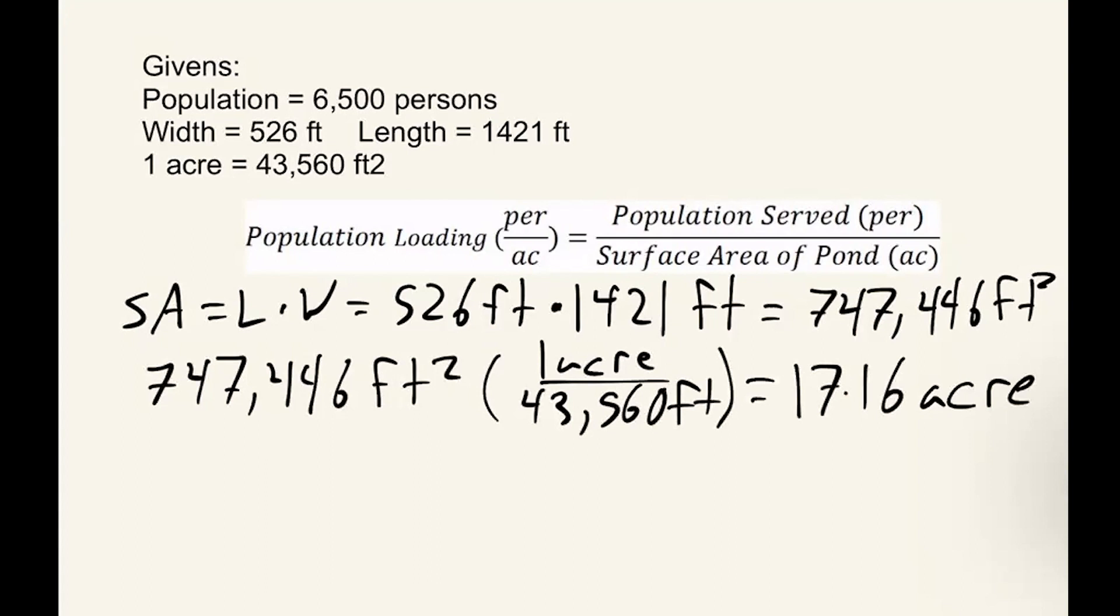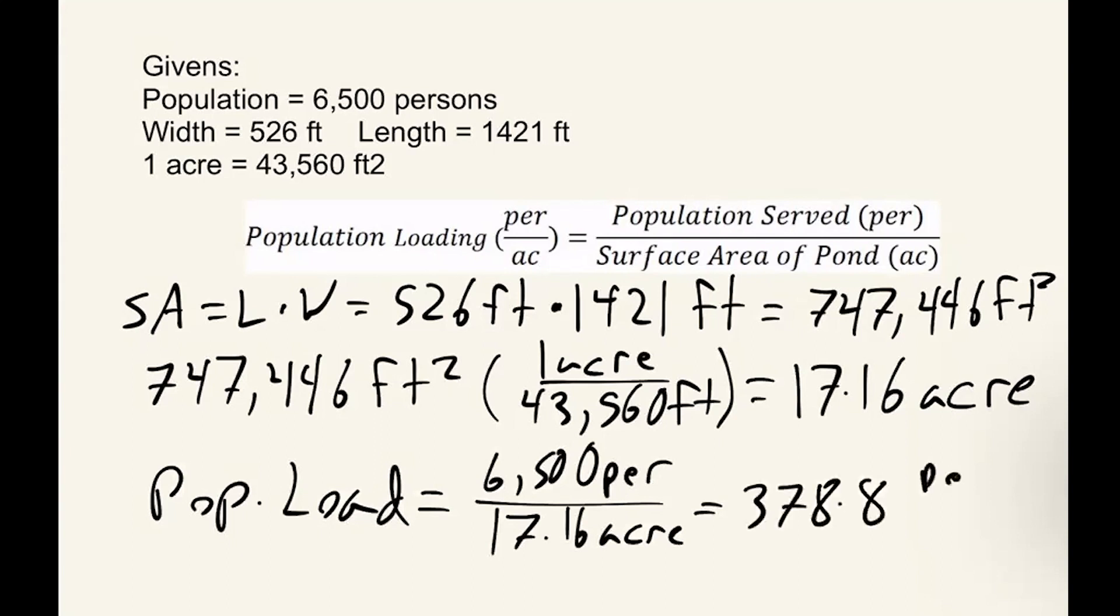Now we take our population loading equation. I'm going to shorten it to pop load, is equal to a population of 6,500 people divided by 17.16 acres. And this is equal to 378.8 people per acre. Now this is greater than the 225 that was sized for, so it shows us that the ponds are too small for the population that they are currently serving.